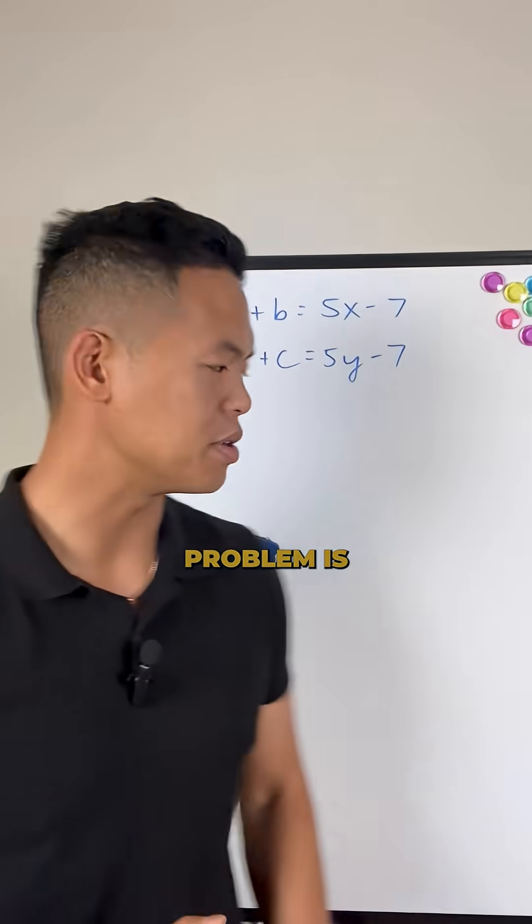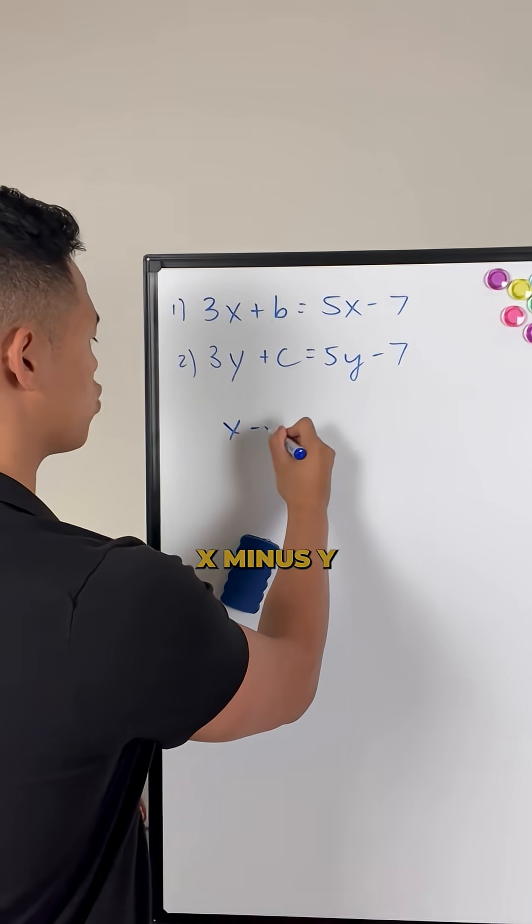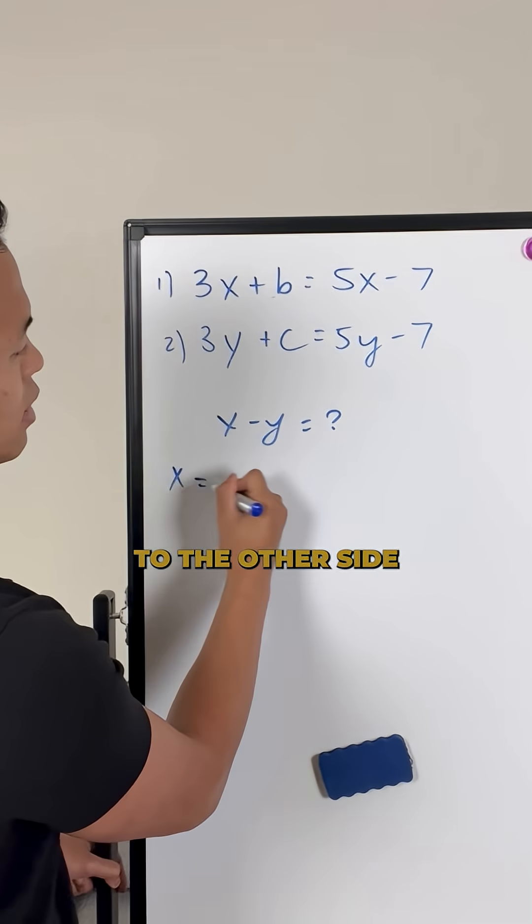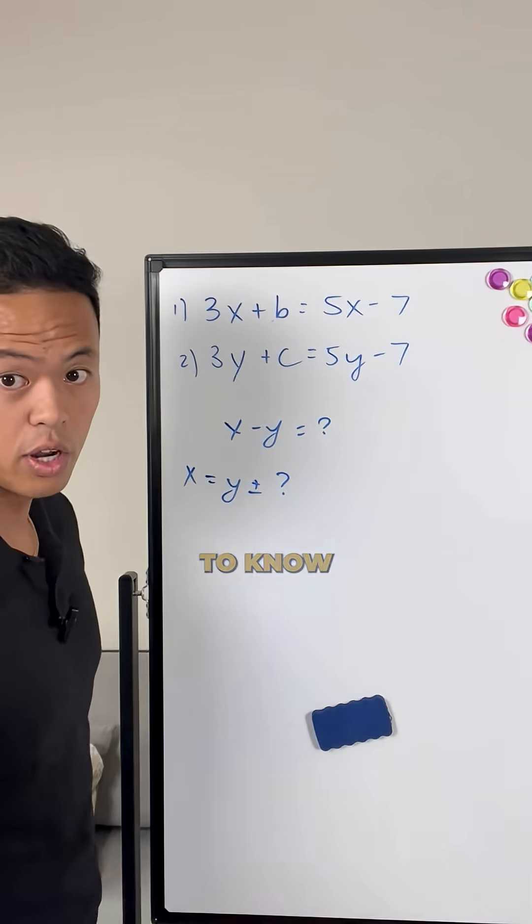So the easiest way to do this problem is just figure out what does x minus y equal to. Then we can very easily add y to the other side. And then you're going to figure out what we want to know.